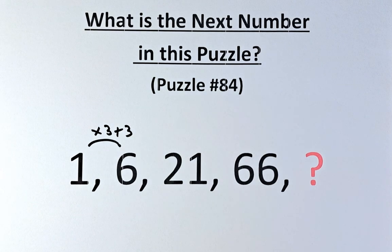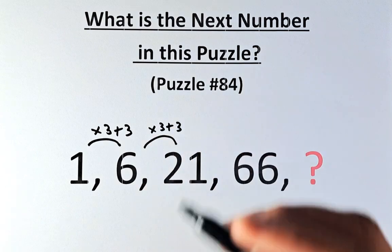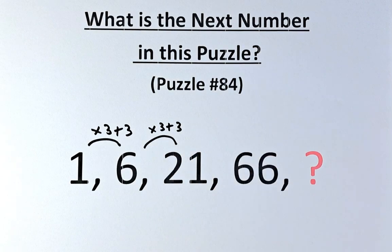Similarly, from 6 to 21, we're going to do the same thing: multiply by 3 and plus 3. 6 times 3 is 18, and 18 plus 3 will give us 21. So the trend continues.